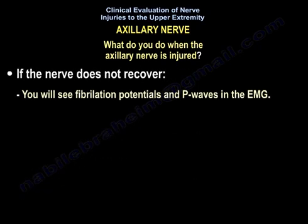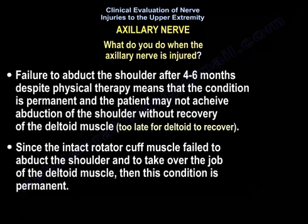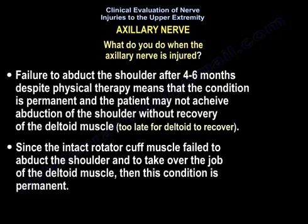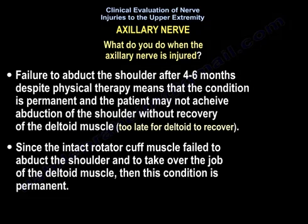However, if the nerve does not recover, you will see fibrillation potentials and P-waves in the EMG. Failure to abduct the shoulder after 4 to 6 months despite physiotherapy means the condition is permanent, and the patient may not achieve abduction of the shoulder without recovery of the deltoid. Since the intact rotator cuff muscle failed to abduct the shoulder and take over the job of the deltoid, this condition is permanent.